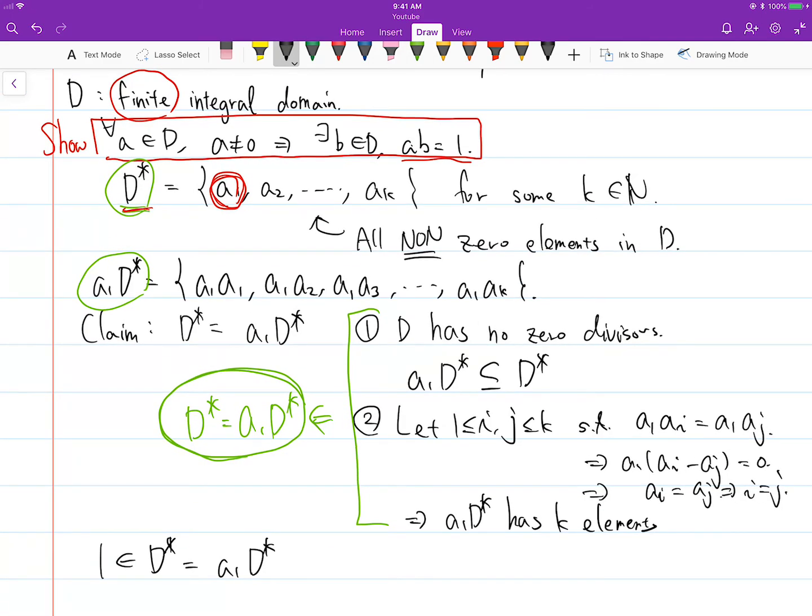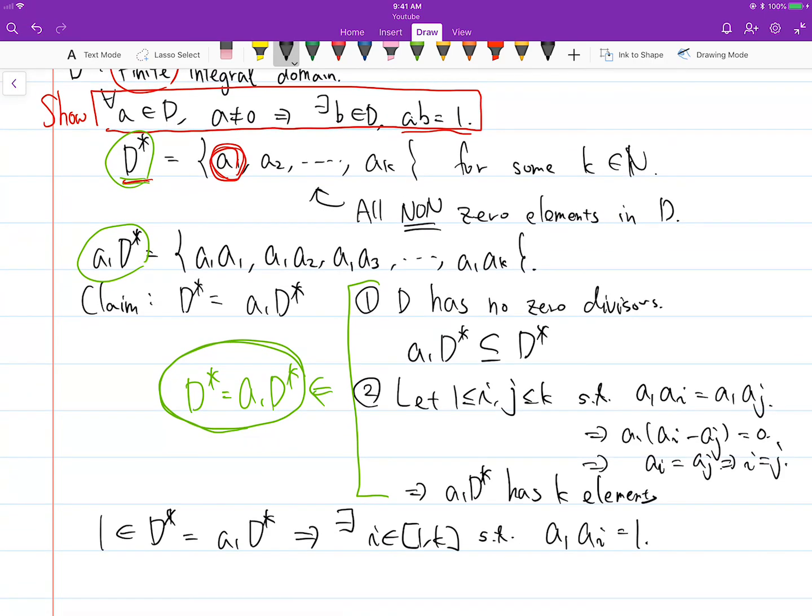What that means is there exists i such that A1 times ai equals one. So this means ai has to be the multiplicative inverse of A1.